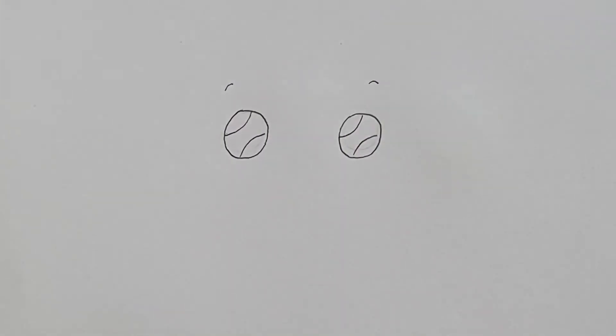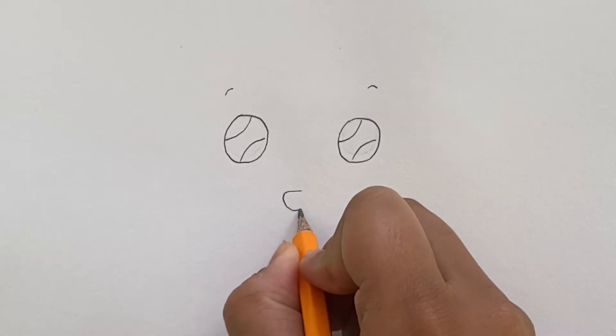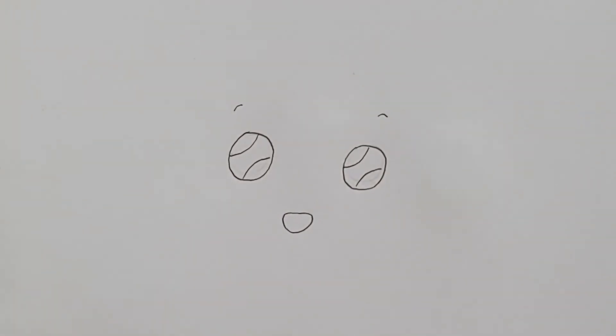And now we're just going to add some little eyebrows at the top. Now we're going to move on to the nose, so draw like a triangle kind of shape. It's kind of like a curvy triangle.